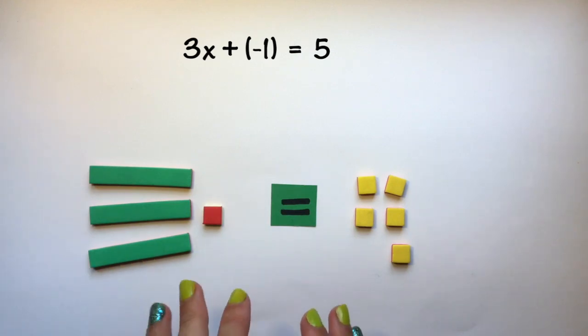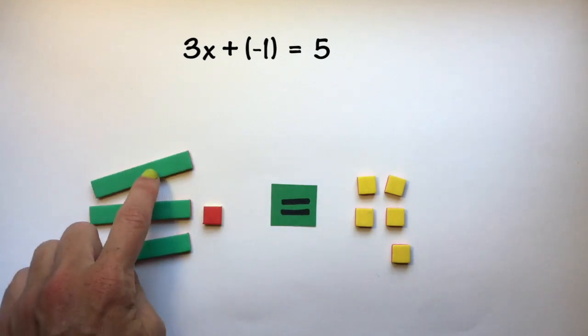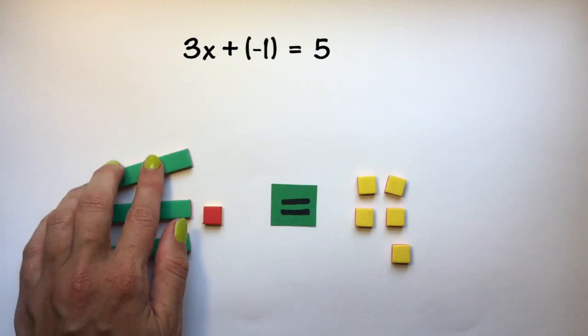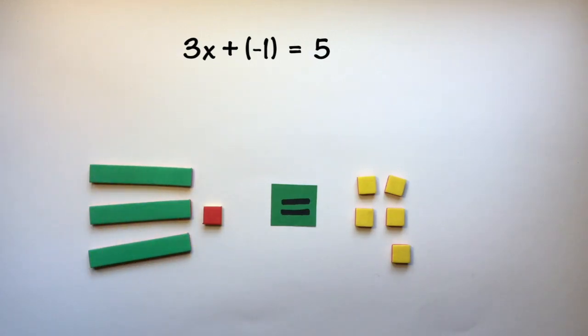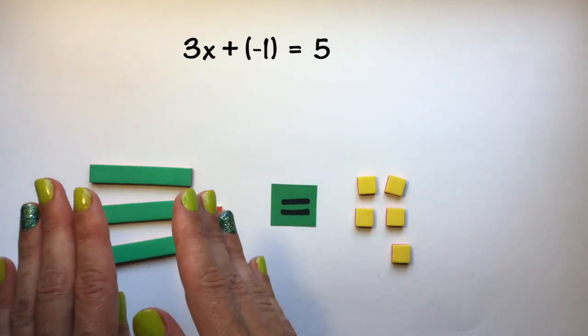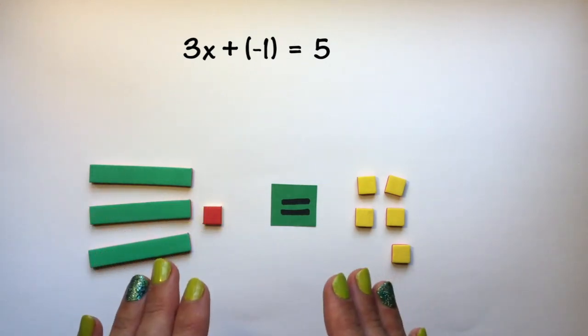Now first thing that I need to do when trying to isolate just 1x is that I need to get rid of any integer tiles. I need there to be only variables on this side of my equation, no integers.